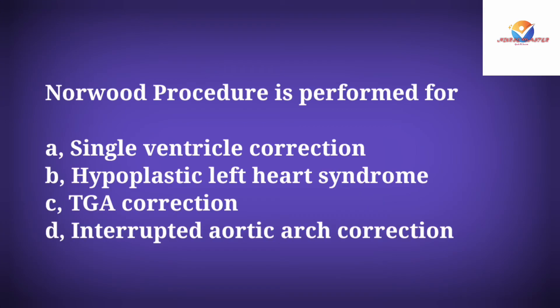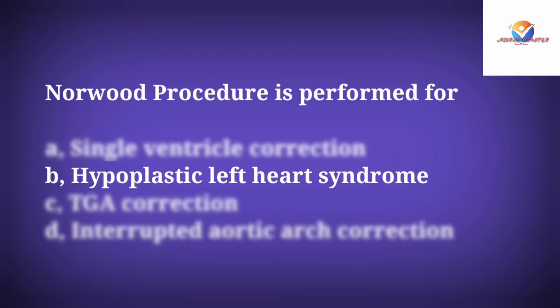Question: The Norwood procedure is performed for which condition? Option A: Single ventricle correction. Option B: Hypoplastic left heart syndrome. Option C: TGA correction. Option D: Interrupted aortic arch correction. The correct answer is Option B: Hypoplastic left heart syndrome.